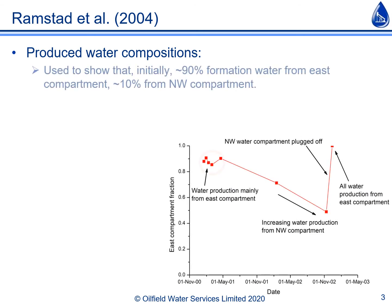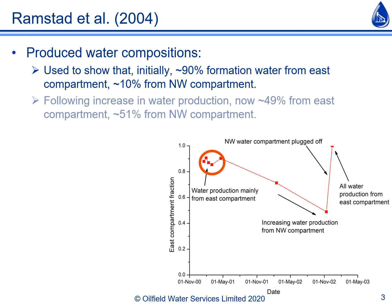This showed that initially 90% of the produced water was from the east compartment and only approximately 10% was from the northwest compartment. But following the significant increase in water production, only 49% was being produced from the east compartment whilst the northwest compartment was now producing 51% of the total water flow.